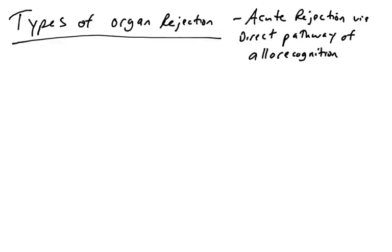We're going to see why that occurs, how the recipient's immune system recognizes the donor organ as foreign or non-self and then attacks it. This is going to occur using something called the direct pathway of allorecognition.